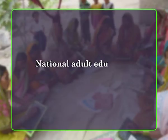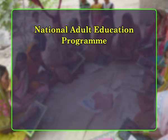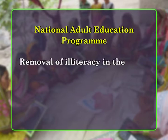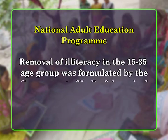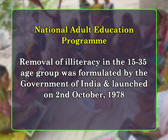The first nationwide attempt at eradication of illiteracy was made through the National Adult Education Program. To follow up the recommendations of the Education Commission report and the subsequent National Policy on Education 1968, a massive program of adult education called the National Adult Education Program for removal of illiteracy in the 15 to 35 age group was formulated by the government of India and launched on 2nd October 1978.